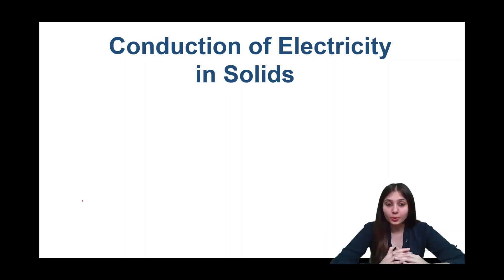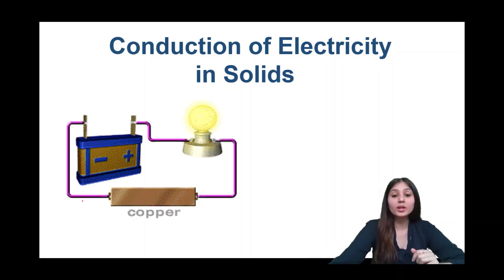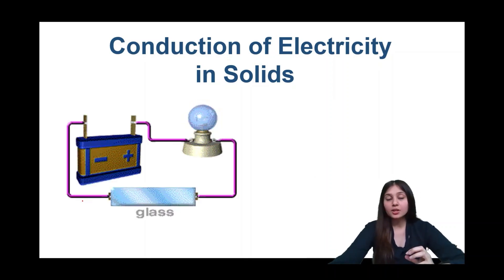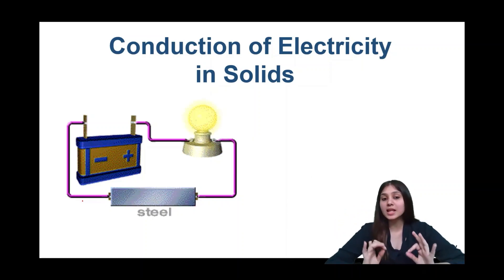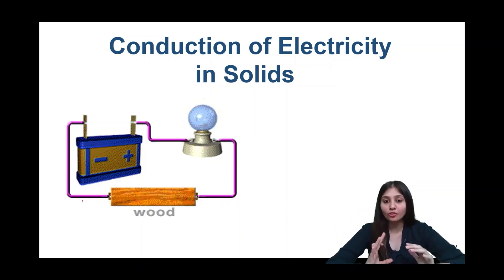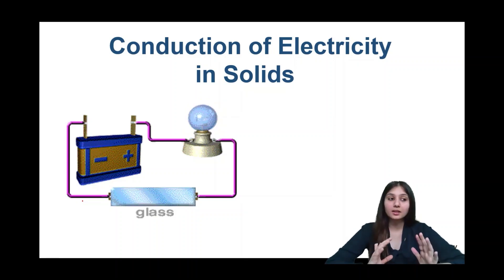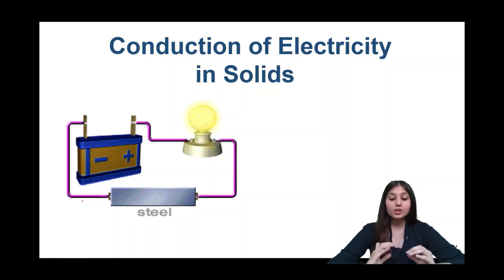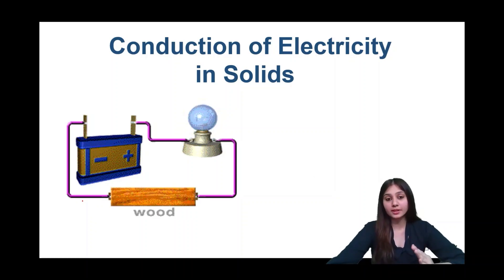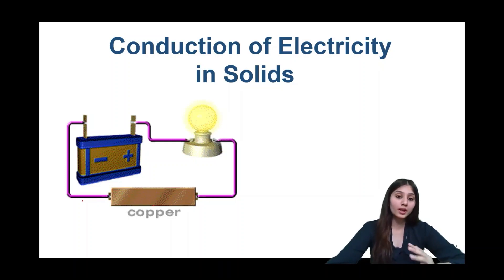Whereas if we talk about wood, everybody knows that wood is not a conductor. No matter from what place of the earth we import the wood, wood is never going to be able to conduct electricity — it is going to burn off, but it is not going to conduct. So that is why wood does not fall into the category of conductors. So on your screens, you can see certain materials added into a circuit where if the bulb glows, they are conductors, and if the bulb does not glow, they are insulators.